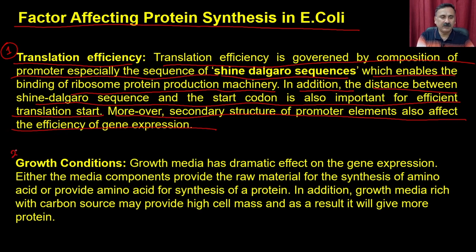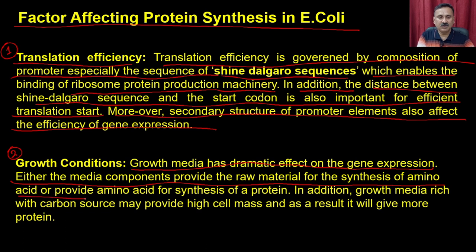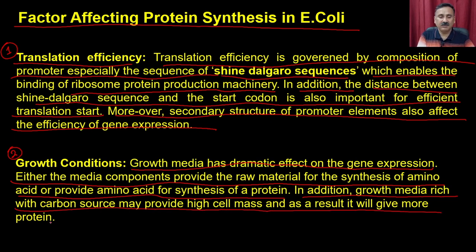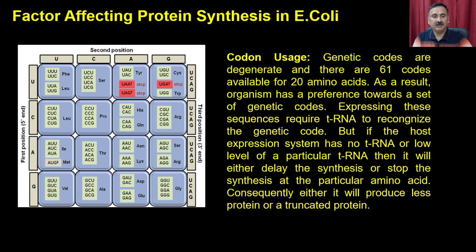The second factor is growth conditions. Growth media has a drastic effect on protein production — either the media components provide raw material for the synthesis of amino acids or provide amino acids directly for protein synthesis. In addition, growth media rich with carbon source may provide high cell mass and consequently more protein.